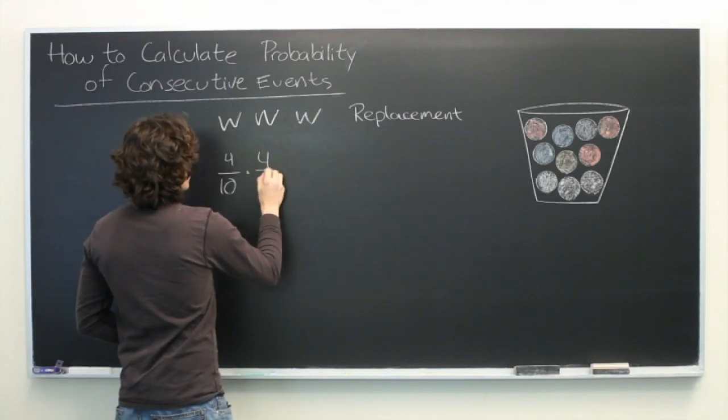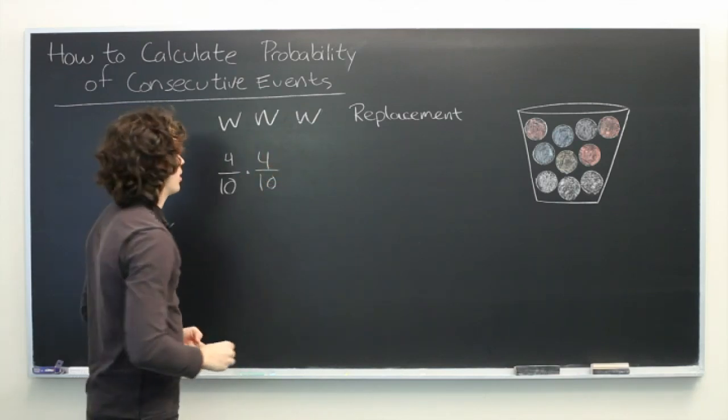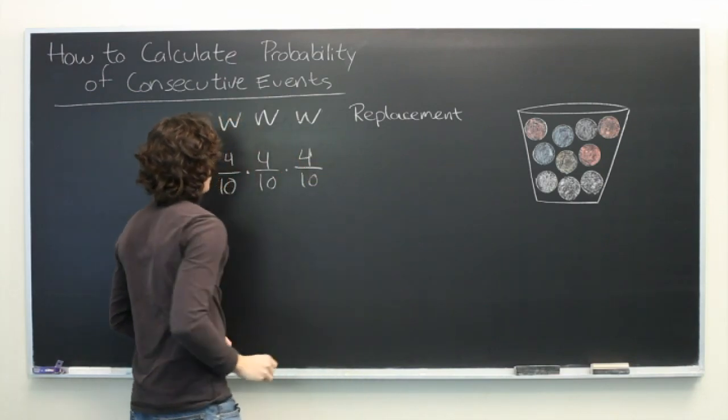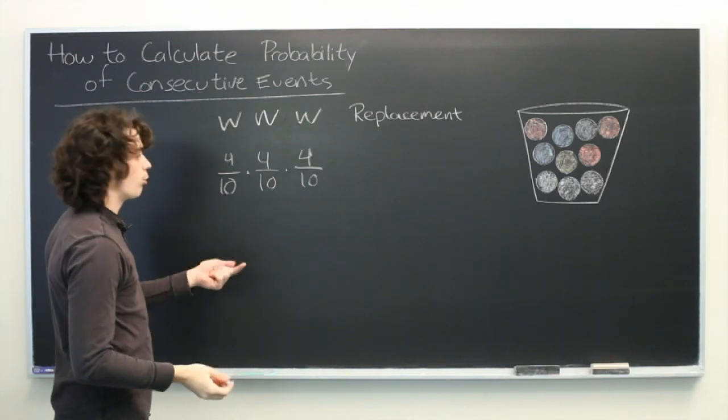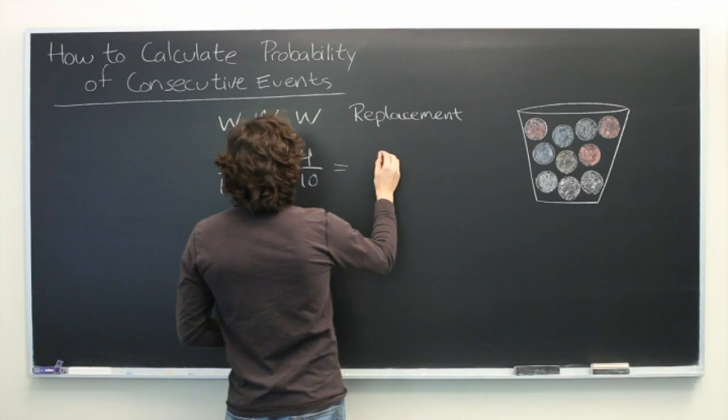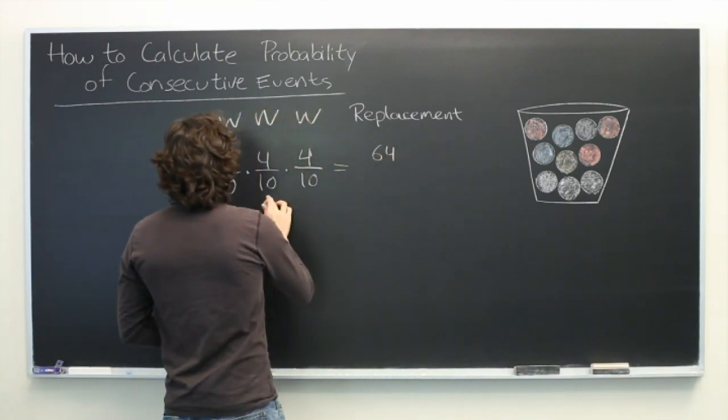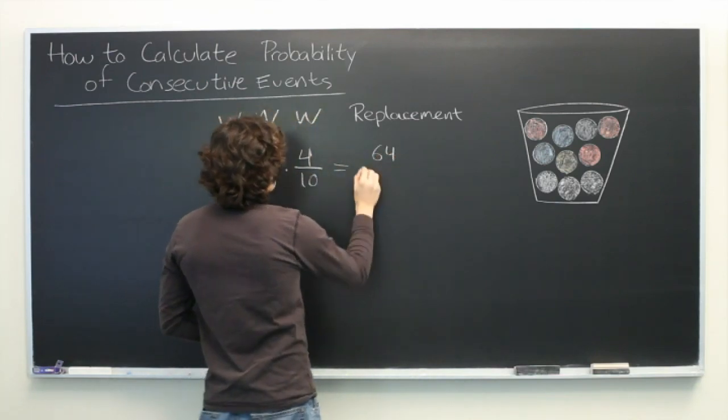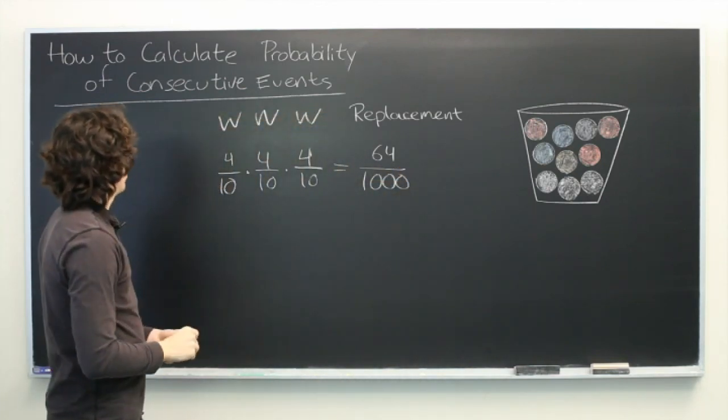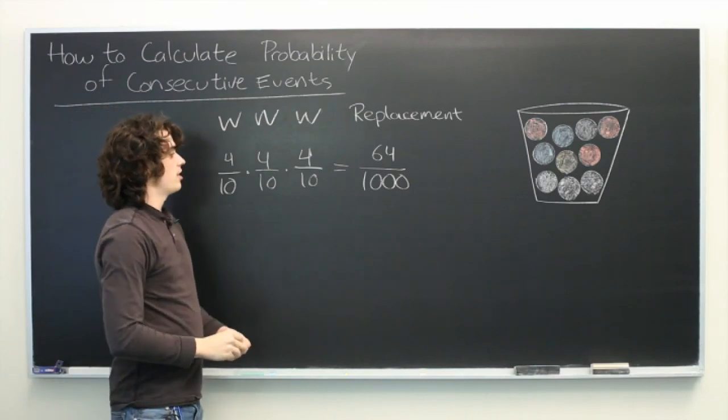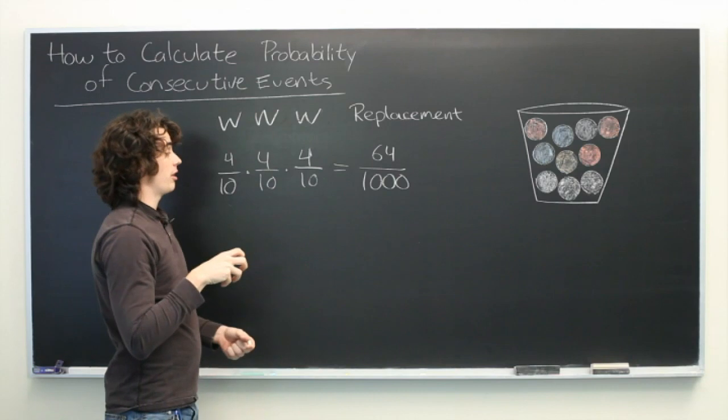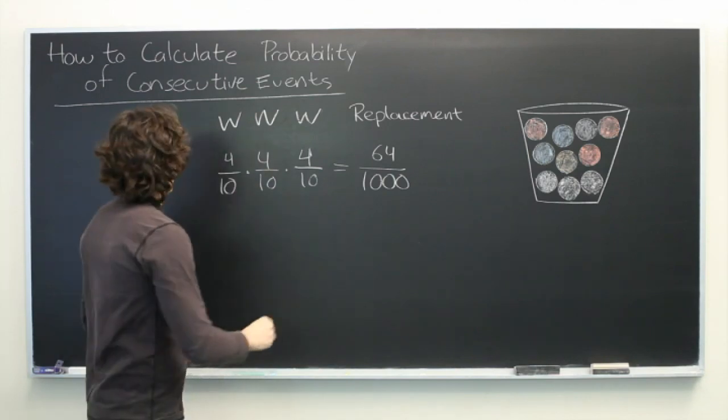There's a four in ten chance of getting white the first time, four in ten chance of getting white the second time, and four in ten chance of getting white the third time. To find the total probability, we just multiply them all together. We get four times four is sixteen, times four is sixty-four, and ten times ten is a hundred, times ten is a thousand. Essentially, there is a sixty-four in one thousand chance that drawing three times with replacement will give you three white balls.